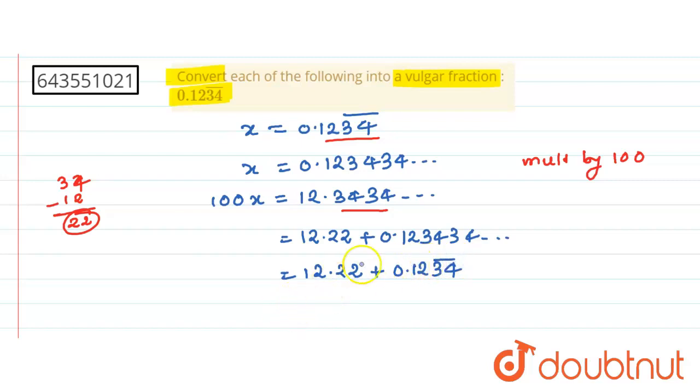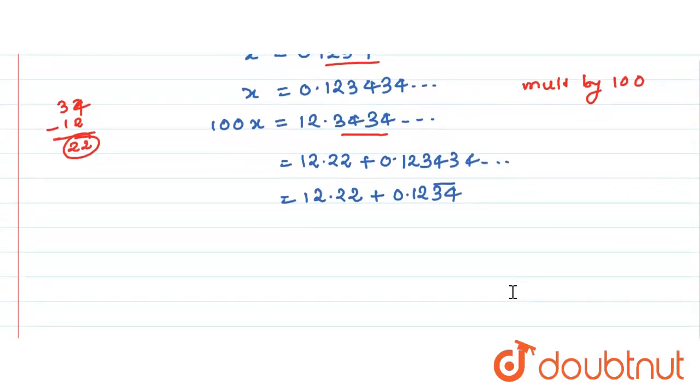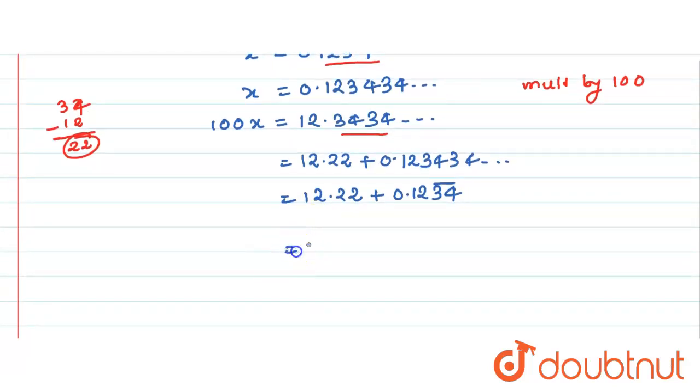But how we can write this 12.22? So divide by 100. This is equal to 1222 divided by 100 plus this is nothing but x because we have already taken x is equal to 0.1234 bar and this is nothing but our 100x.